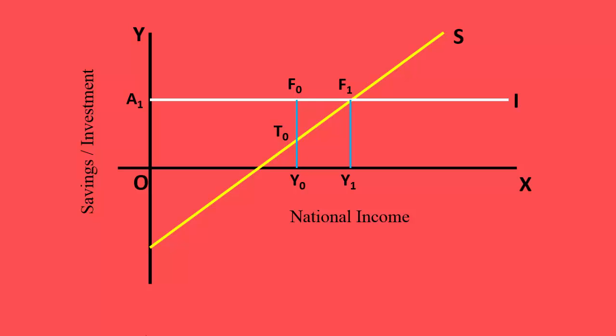Take any income to the right of Y1. Let it be Y2. It is greater than the equilibrium level of income. Savings is T2, but investment is F2. Investment is less than savings. It means aggregate demand is less than aggregate supply.